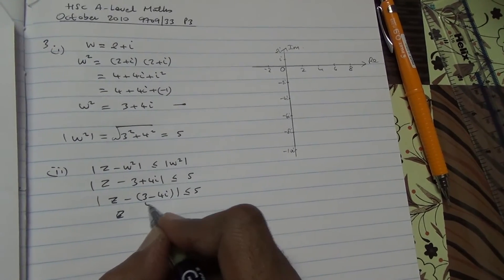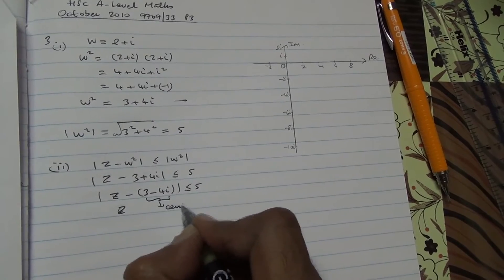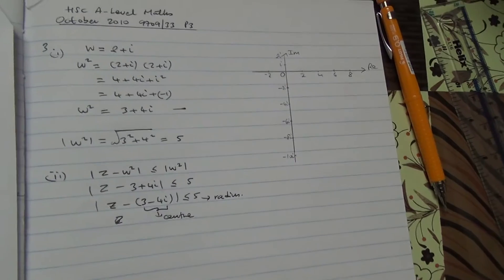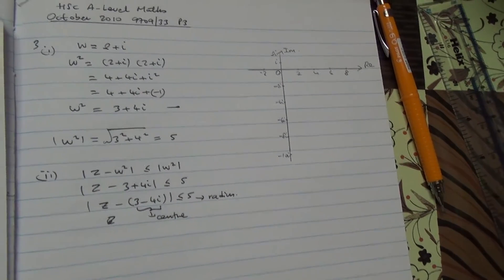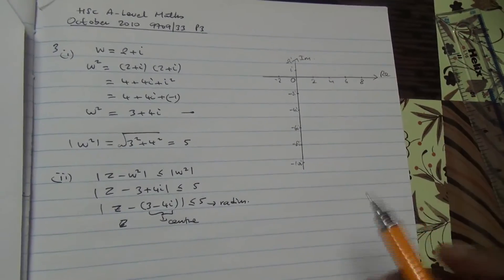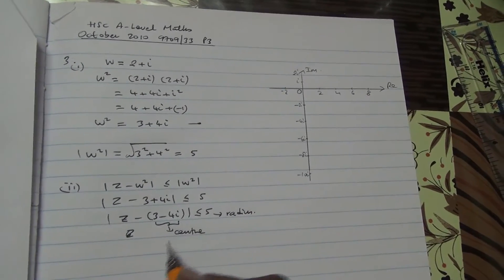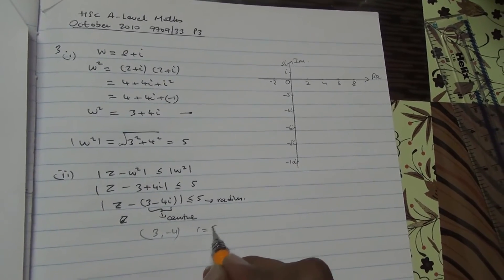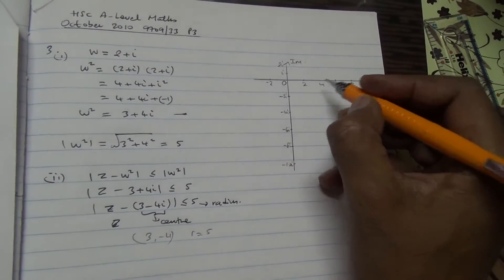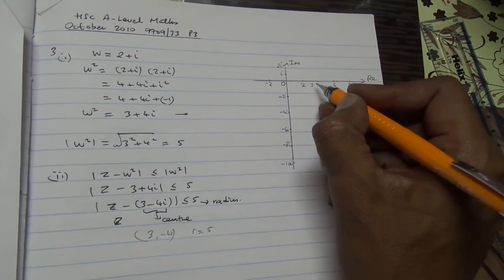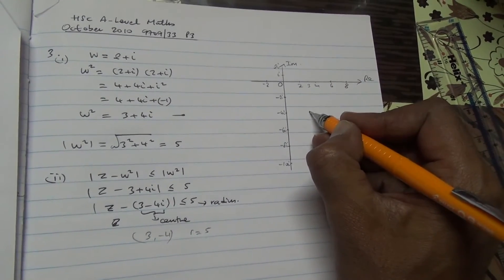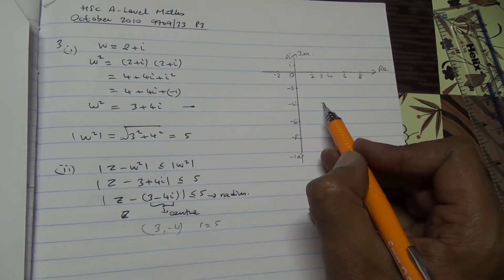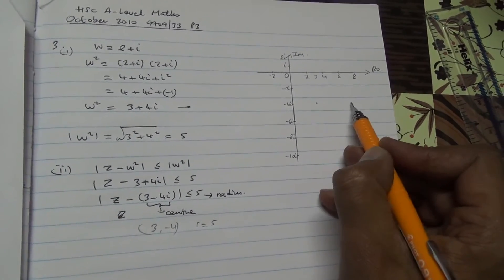And again we have this. So this is going to be the center of a circle, and that's the radius. So if we do it on an Argand diagram, we have the center of 3 minus 4i. Radius 5. So 3 minus 4i will be somewhere here. And then because the radius is 5 from this point, you have a radius of 5. So if you move 5 to the right, 3 plus 5 is going to be 8.